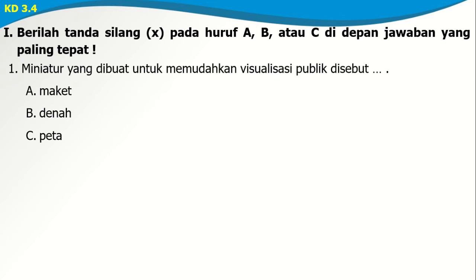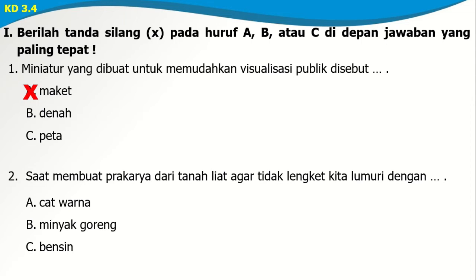Kita menuju latihan soal KD 3.4. Soal nomor 1: Miniatur yang dibuat untuk memudahkan visualisasi suatu tempat disebut A. Maket, B. Dinah, atau C. Peta. Miniatur lebih kecil dari benda sebenarnya. Kalau miniatur suatu tempat itu disebut dengan maket. Nomor 2: Saat membuat prakarya dari tanah liat agar tidak lengket, kita lumuri dengan A. Cat warna, B. Minyak goreng, atau C. Bensin. Jawabnya adalah minyak goreng. Kalian bisa juga menggunakan air.